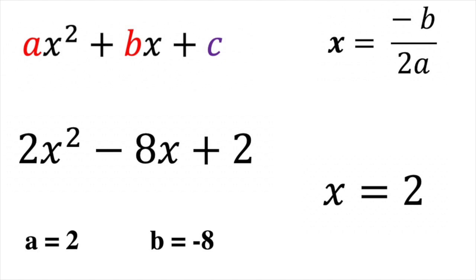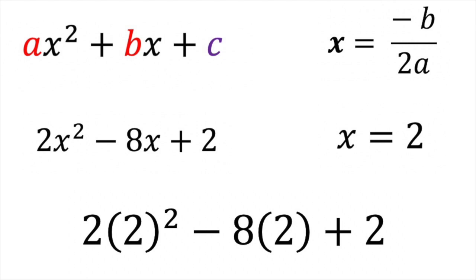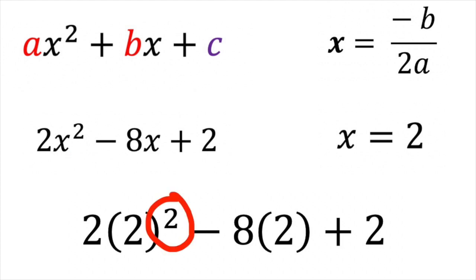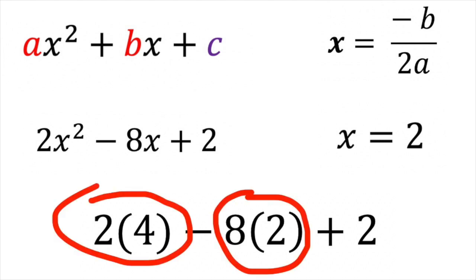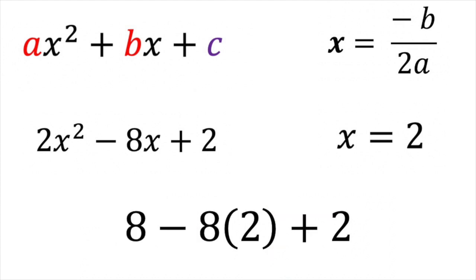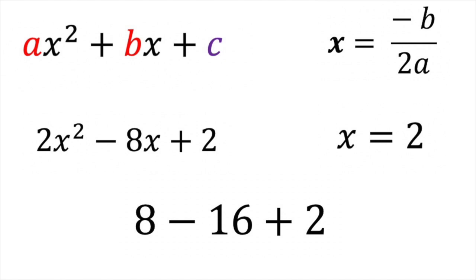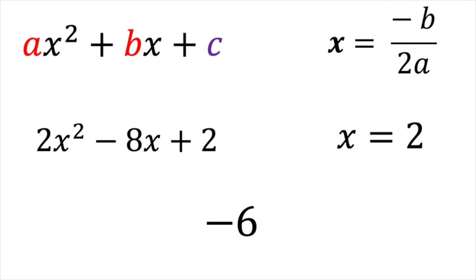Now to find the y-coordinate, we plug that x value of 2 back into the original equation. I've substituted 2 in parentheses for x. Following order of operations: first the exponent — 2 squared is 4. Then multiplication — 2 times 4 is 8, and 8 times 2 is 16. Then addition and subtraction left to right: 8 minus 16 plus 2 equals negative 6. So negative 6 is the y-coordinate of our vertex, meaning the vertex is (2, −6).